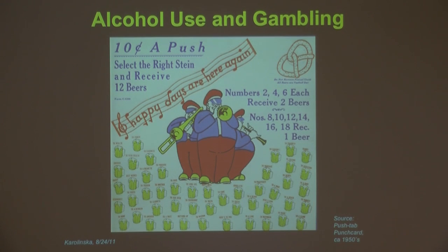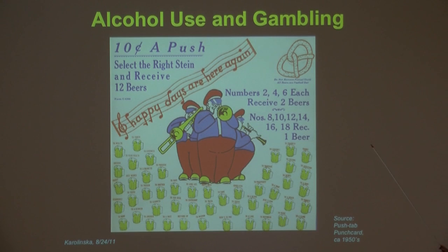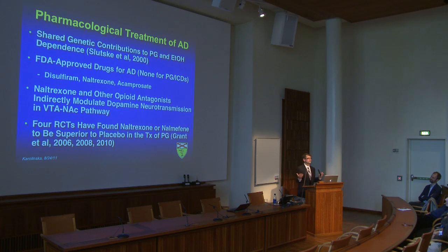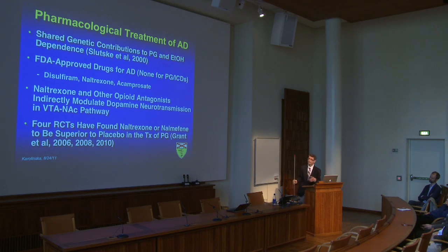That brings us to the relationship between alcohol use and gambling. This is a precursor to a scratch-off lottery ticket — actual gambling paraphernalia — where one would pay 10 cents and each beer stein pushed out would have a number on the back, receiving either one or two beers, highlighting the complex relationship between gambling and alcohol use at a social level. At a biological level, there are data suggesting shared genetic contributions to the co-occurrence of alcohol dependence and pathological gambling.